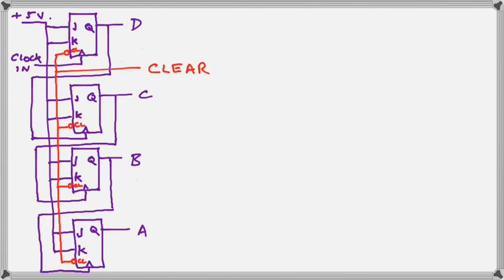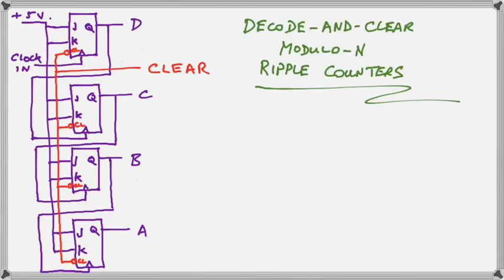And this is the basis of the modulo N ripple counter. We are going to reset these ripple counters using the decode and clear method, which means we will first decode the binary to a specific number, and then apply that to the clear so that the ripple counter will reset. And when we can do this, we can make it reset on any number.